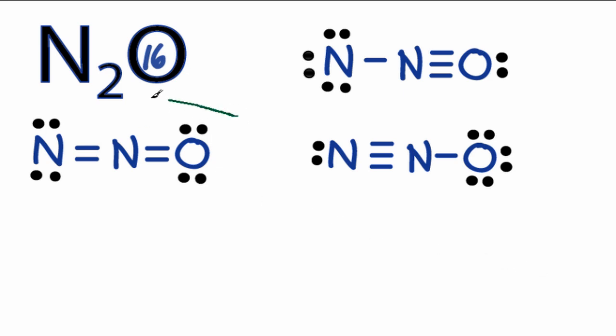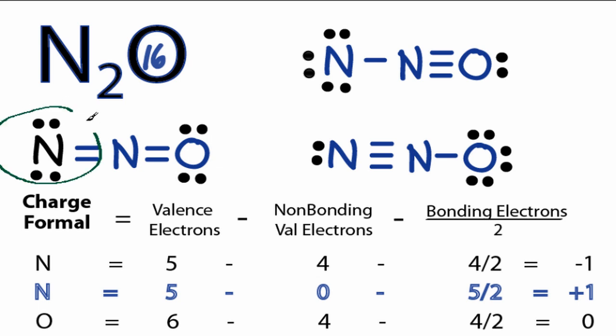Let's start with this one. For this first nitrogen, on the periodic table, nitrogen has 5 valence electrons. For non-bonding, we have 4.